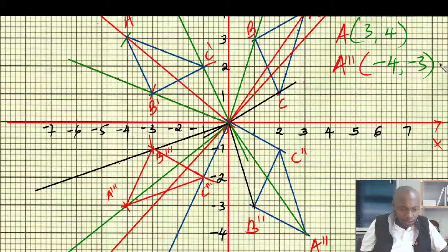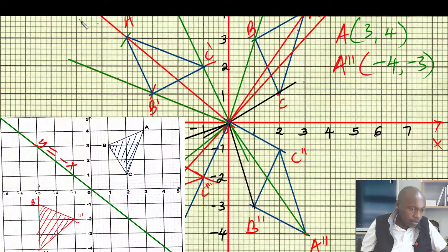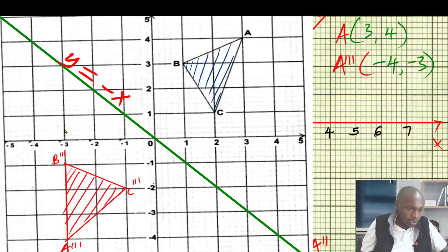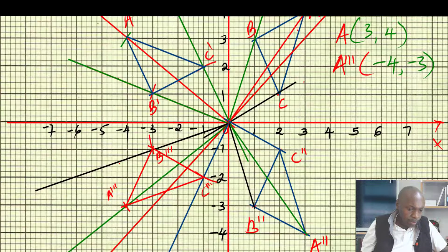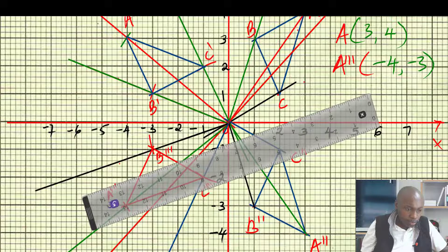If you think of a reflection, you notice that this is a reflection along the line y = -x. If you draw a mirror line here, that is the line y = -x — a line that passes through the middle of the x and y axes.